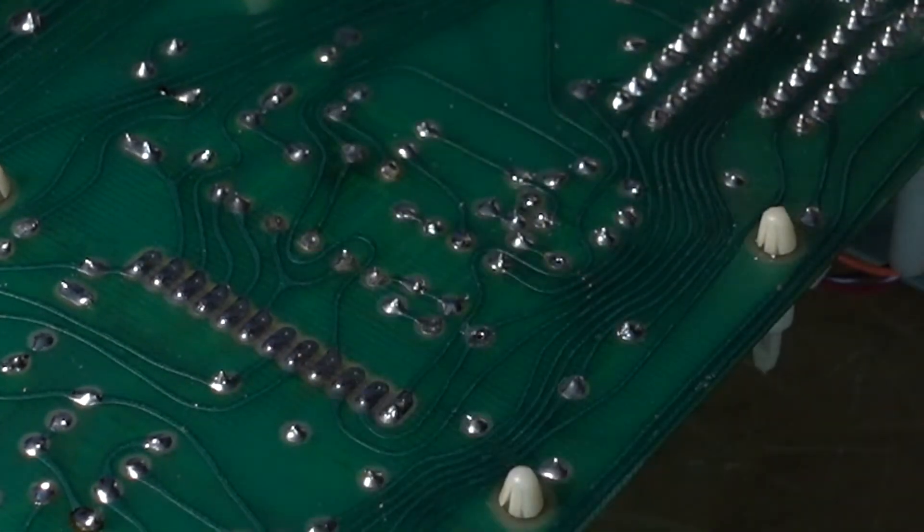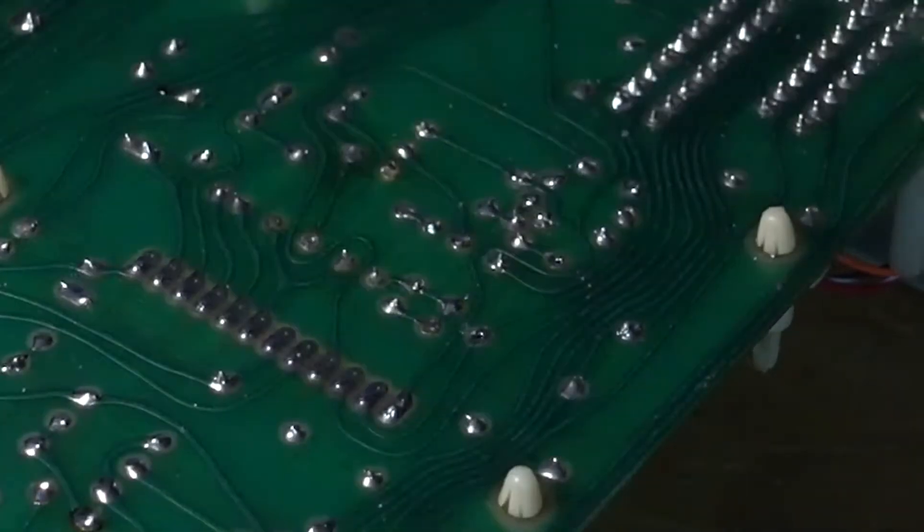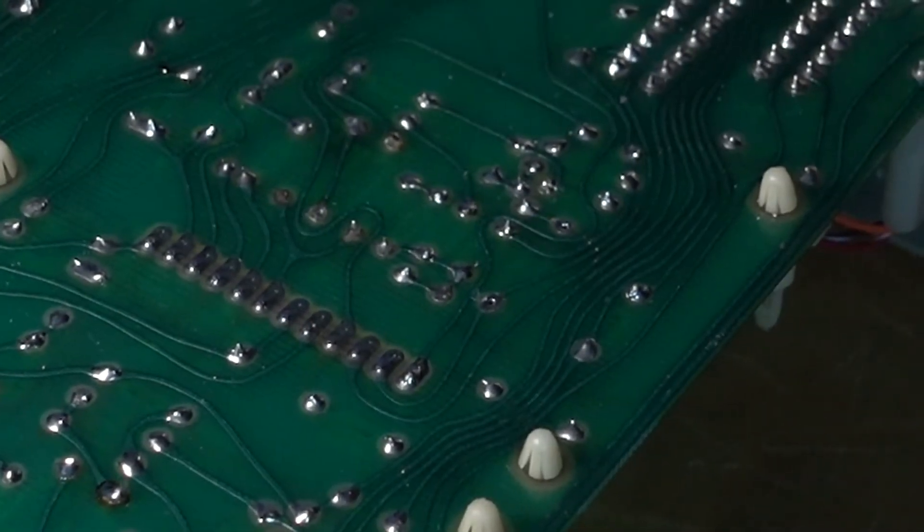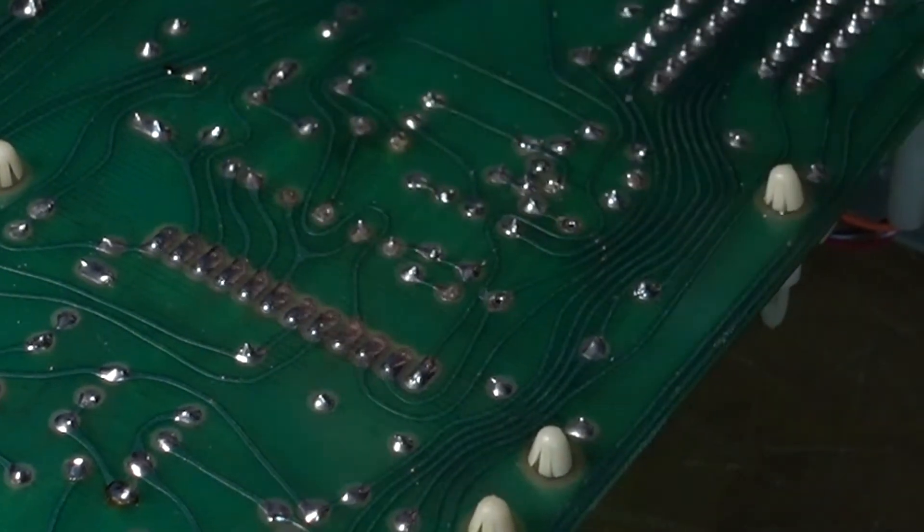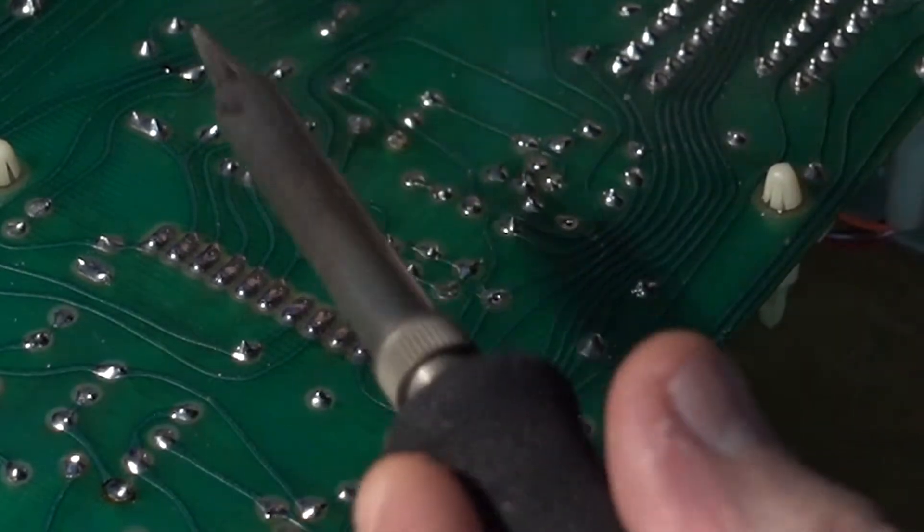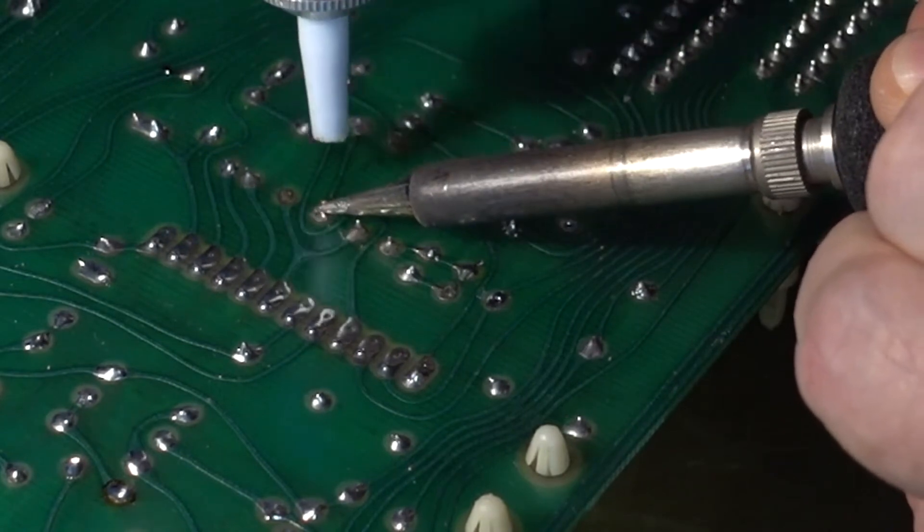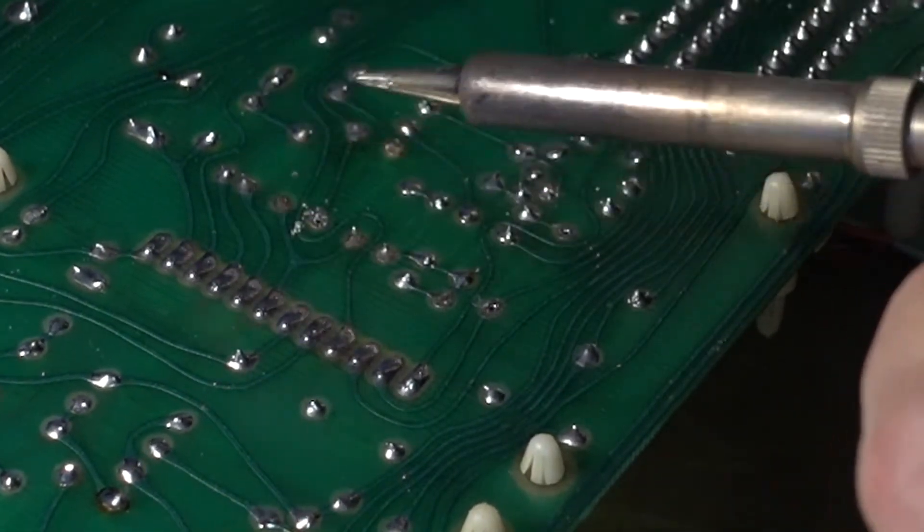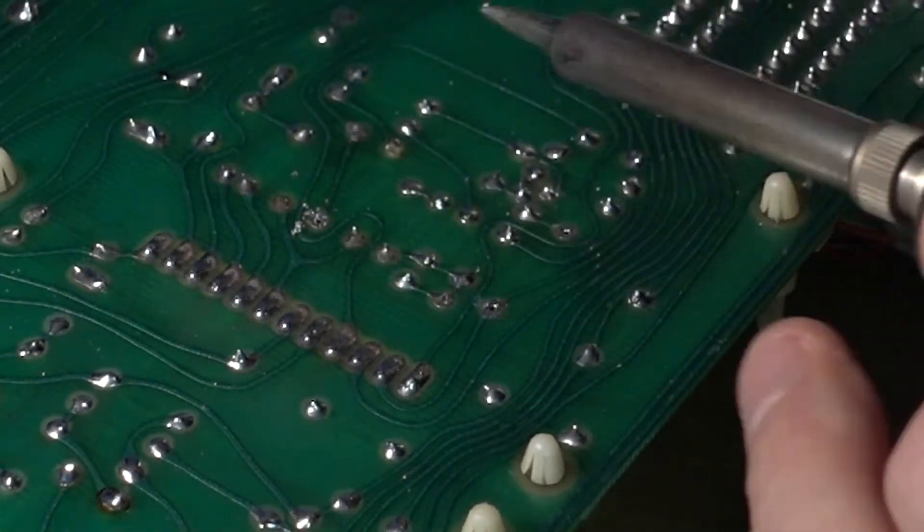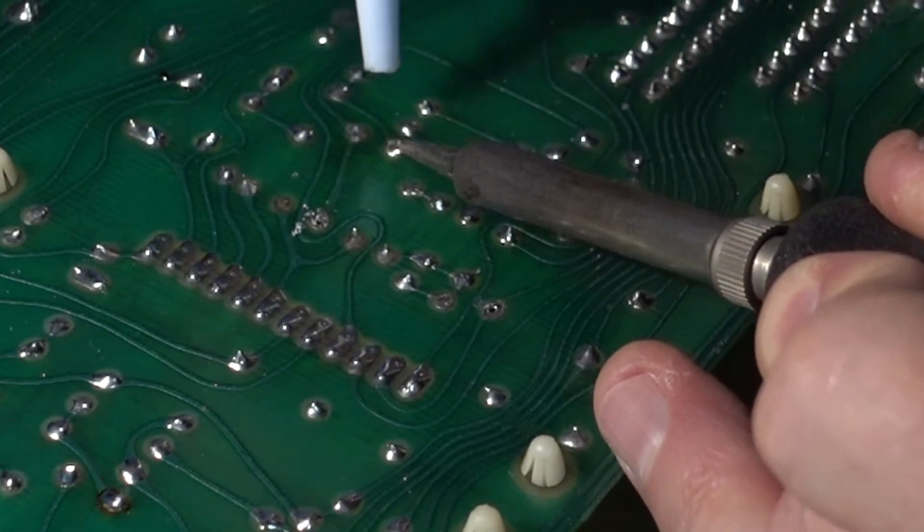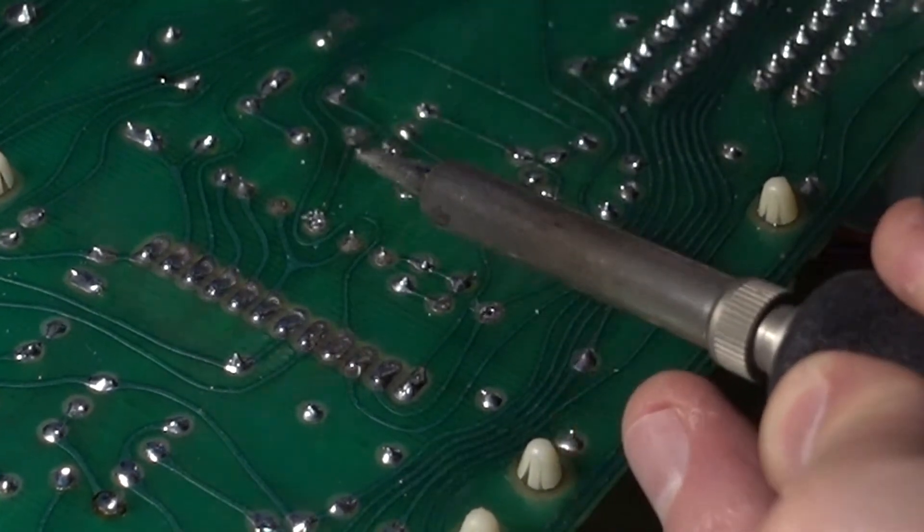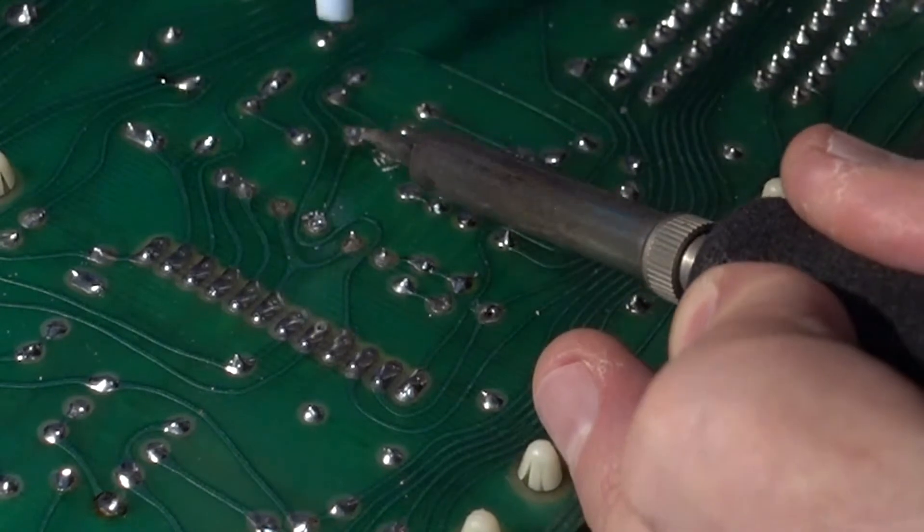Again, we have to clean the holes now. In this case I'm going to be using the readily available hand desoldering pump, which is pretty effective on a board like this. You heat the joint and then use the pump. Sometimes you have to use it a couple of times. But then the holes become clean and you can insert the new part with no problems.